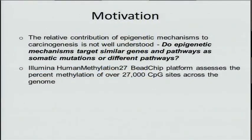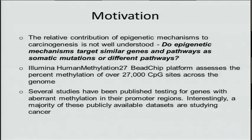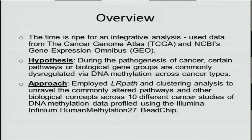A platform that's been used for a couple of years to assess DNA methylation genome-wide is the Illumina Human Methylation 27B chip, which covers over 27,000 CPG sites. Several studies over the past year and a half have been published and are now publicly available using this platform, and many of these available datasets are studying cancer. We decided the time is now ripe, given the data available at TCGA and through NCBI's Gene Expression Omnibus, to do an integrative analysis looking at DNA methylation pathways across cancer types.